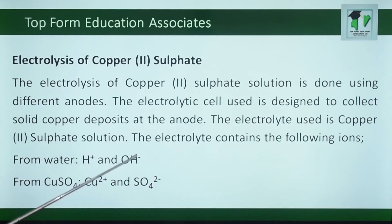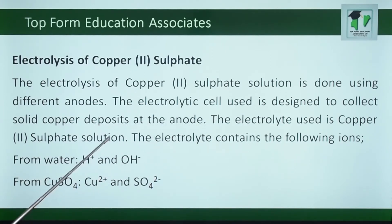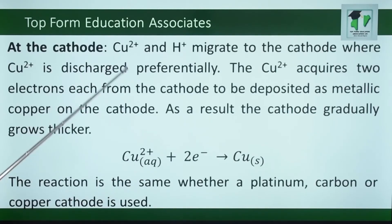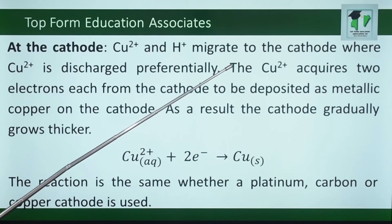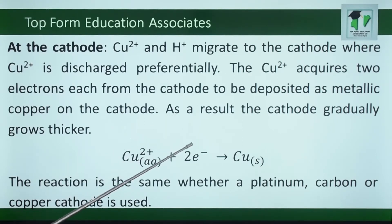Electrolysis of copper-2 sulfate. The electrolysis of copper-2 sulfate solution is done using different anodes. The electrolyte contains the following ions: from water, hydrogen ion and hydroxyl ion; and from copper sulfate, copper-2 ion and sulfate ion. At the cathode, copper-2 ion and hydrogen ion migrate to the cathode, where copper ion is discharged preferentially. The copper ion acquires two electrons from the cathode to be deposited as metallic copper on the cathode. As a result, the cathode gradually grows thicker. The reaction is: Cu²⁺ + 2e⁻ → Cu(s).